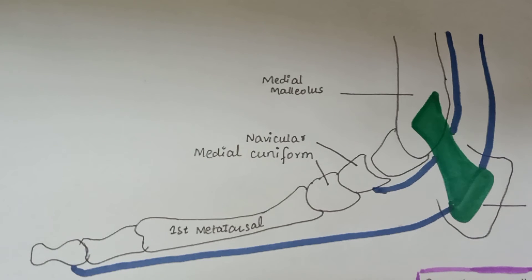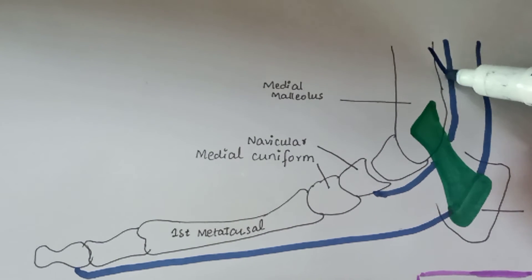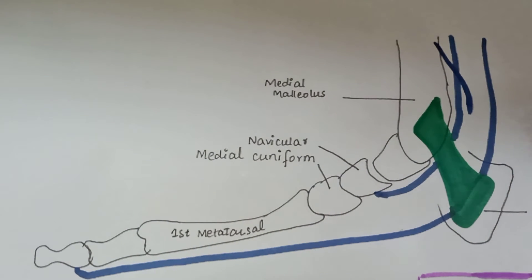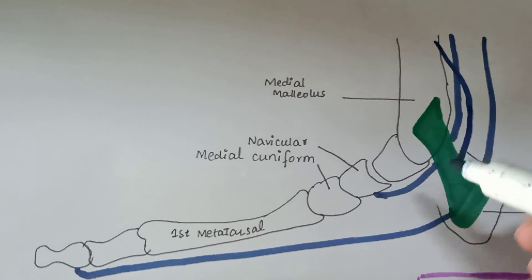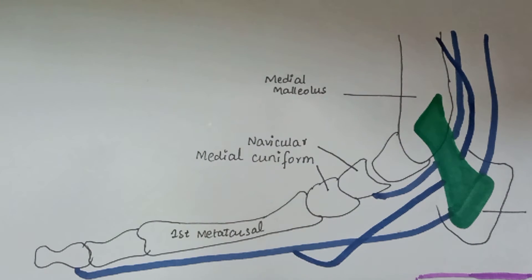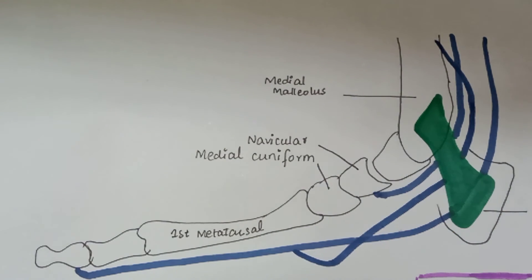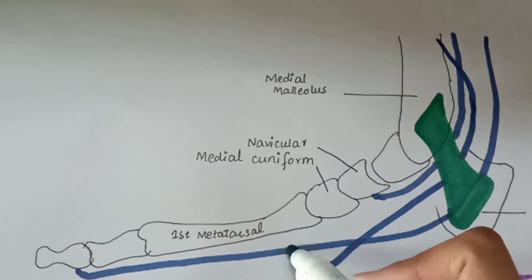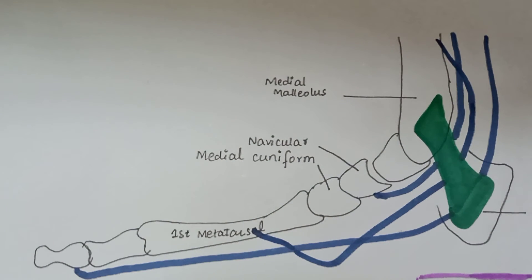Next is the tendon of flexor digitorum longus, which first crosses the tendon of tibialis posterior, then goes underneath the tendon of flexor hallucis longus, and gets inserted into the first metatarsal. These are the three tendons.